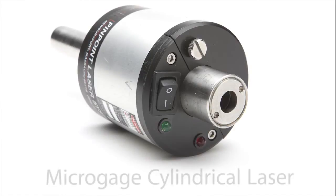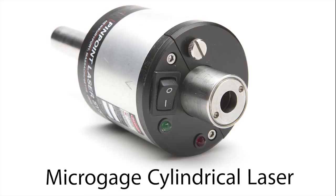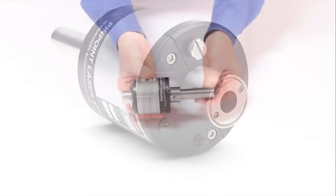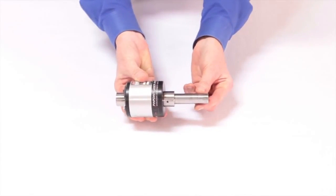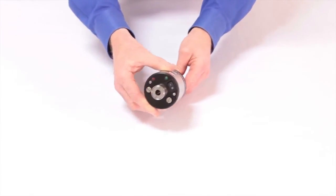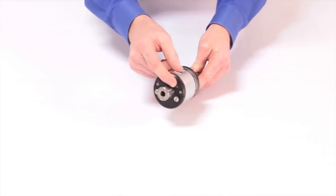The micro gauge cylindrical laser is a self-contained unit that is ideally suited for checking lathes, spindles, and other rotating machinery. A stainless steel shank is used for mounting the laser to a spindle, chuck, a bore, or other types of machinery.